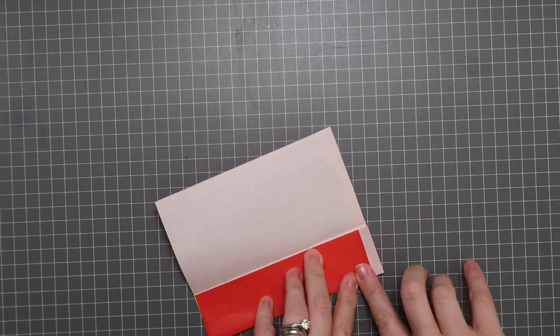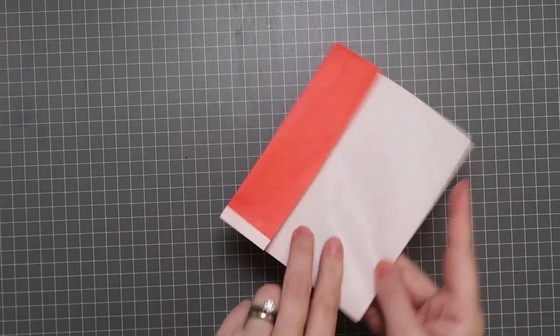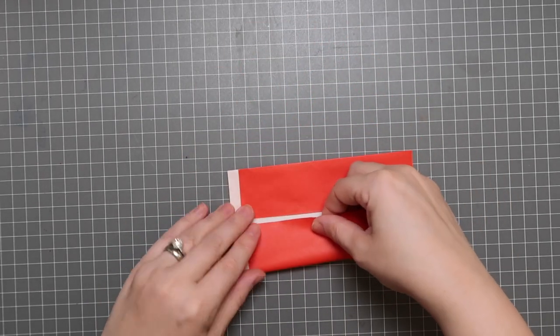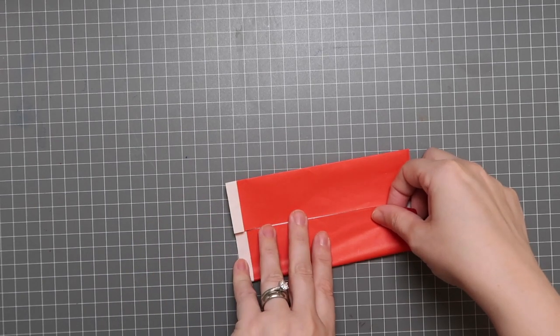Noticing that that little rectangle that we've created, it is on the right-hand side. And turn it around, and now it's on the left-hand side. We're going to bring it into the middle once again, lining it up beautifully.